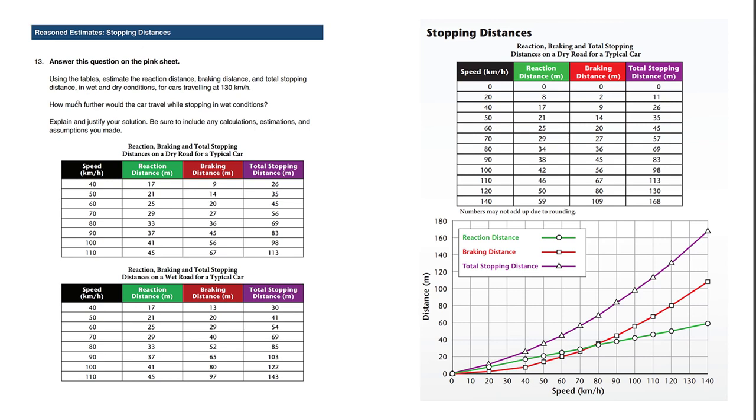Stopping distances. Using the tables, estimate the reaction distance, braking distance, and total stopping distance in wet and dry conditions for cars traveling at 130 km an hour.